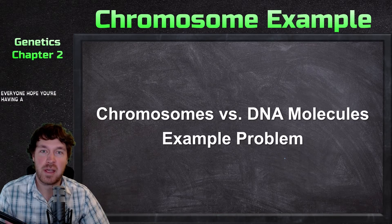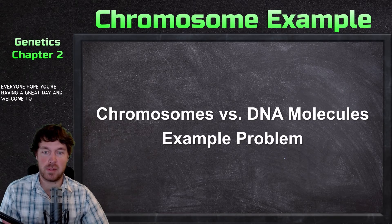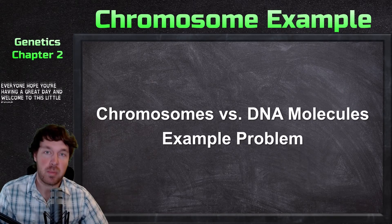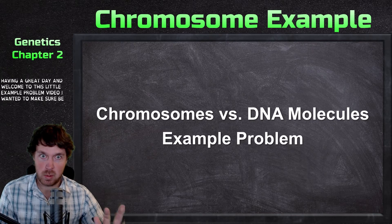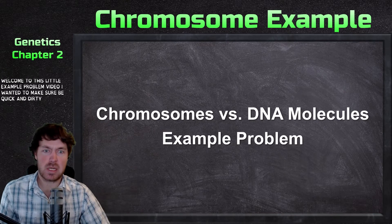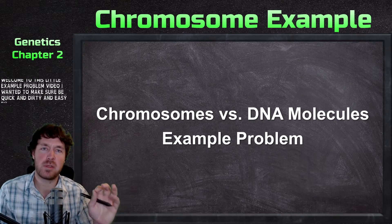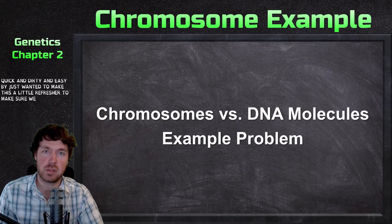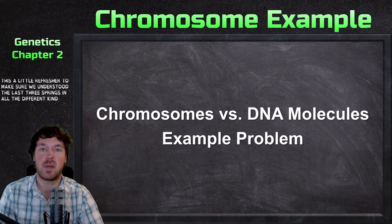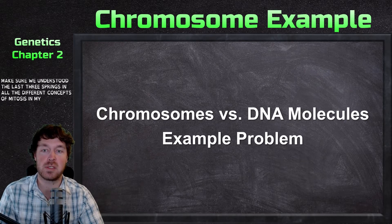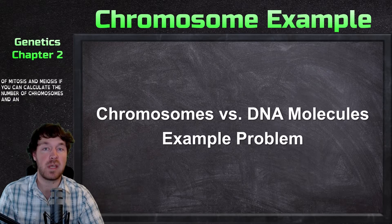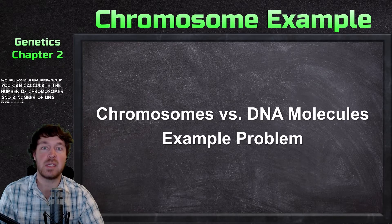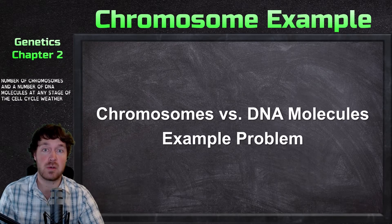Hello everyone, hope you're having a great day and welcome to this little example problem video. This should be quick and easy, just a refresher to make sure we understood the last chapter. This brings in all the different concepts of mitosis and meiosis — if you can calculate the number of chromosomes and the number of DNA molecules at any stage of the cell cycle, whether it's mitosis or meiosis, you're off to a really good start.